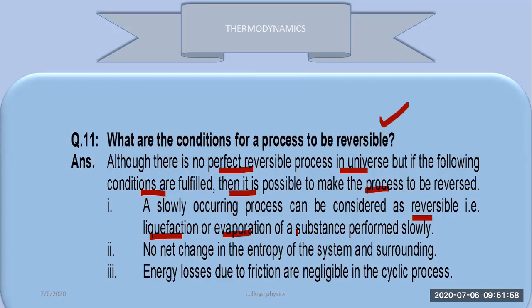Number two: no net change in entropy of the system and surrounding. This is number two - no net change in entropy of the system and the surrounding.